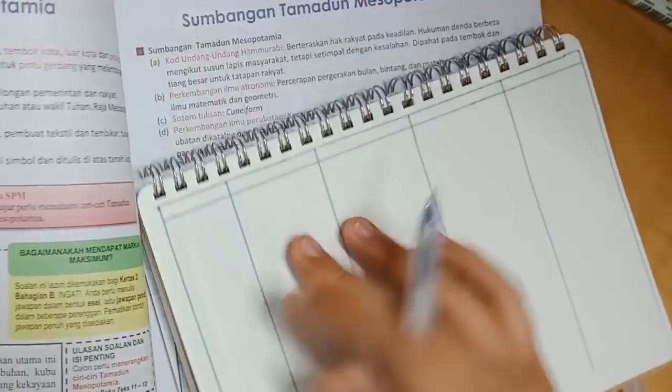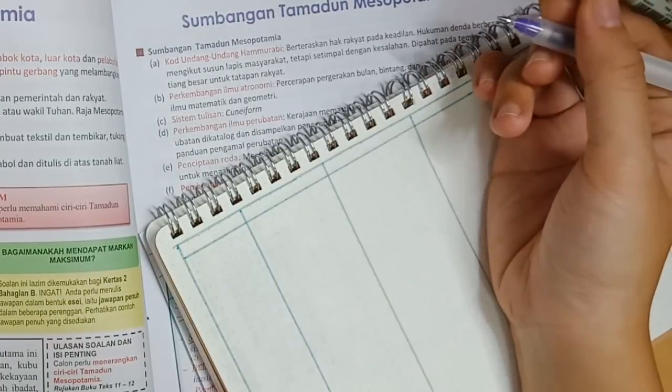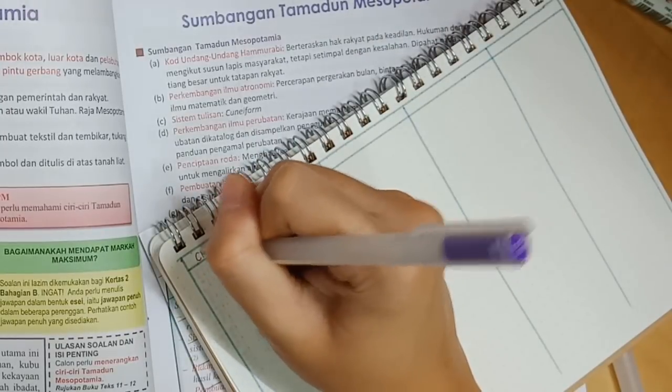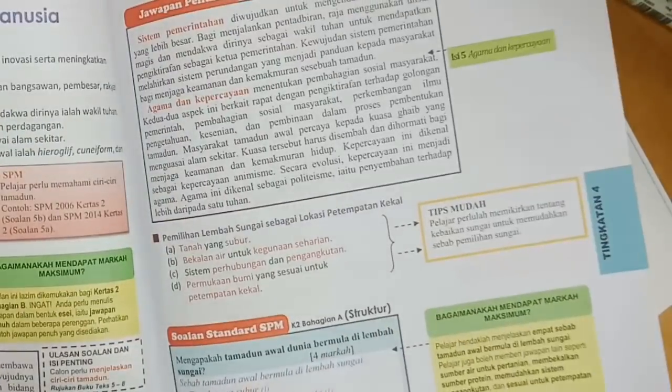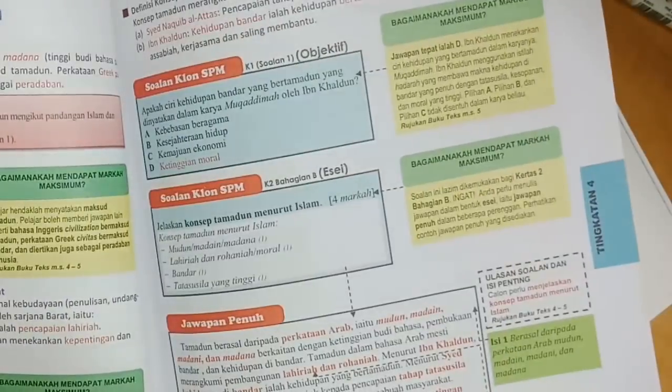So now that we have already done the ciri ciri for Tamadun Awal Manusia, we can now proceed into the specific ciri ciri for Tamadun Mesir Purba, Mesopotamia, Indus and Huangho.